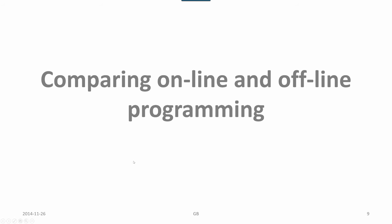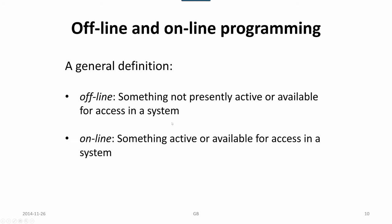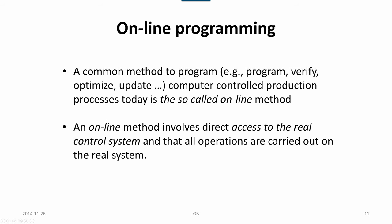Comparing online and offline programming, what are the differences and the pros and cons? A general definition is that offline is something not presently active or available for access within a system, and online is something active or available for access in a system, where the system is the robot system in this case. Online programming is a common method to program computer-controlled production processes today.